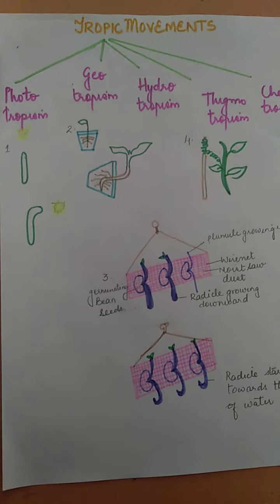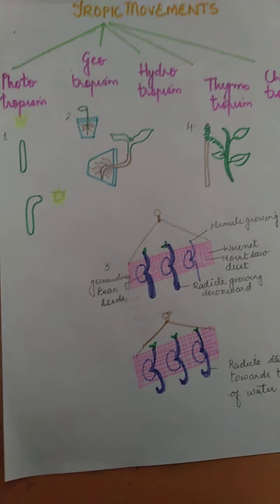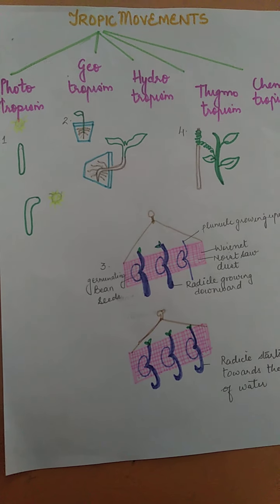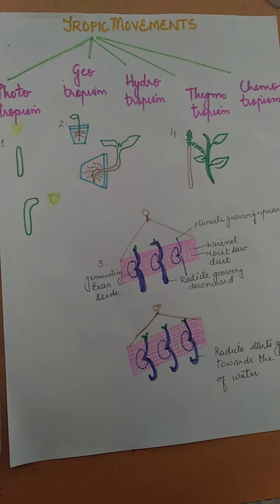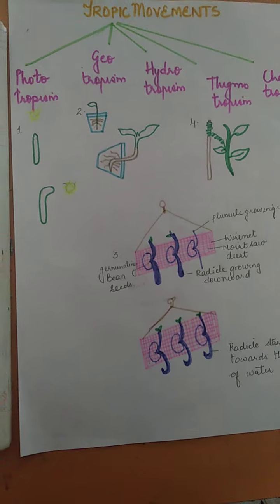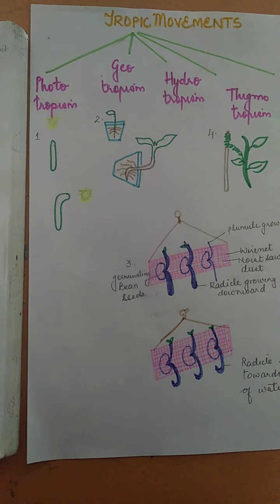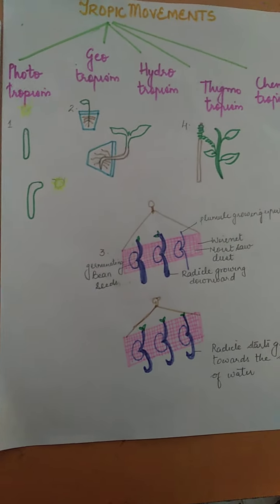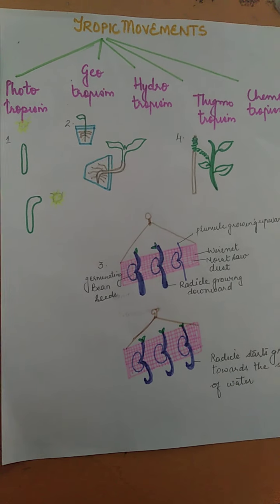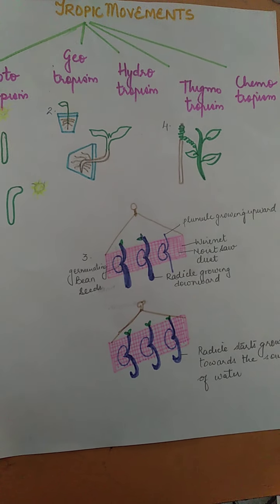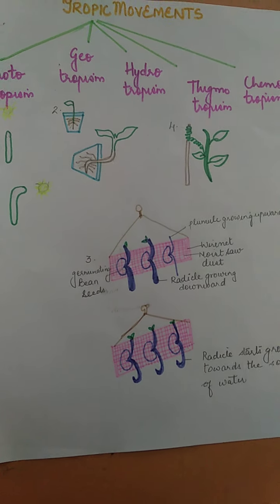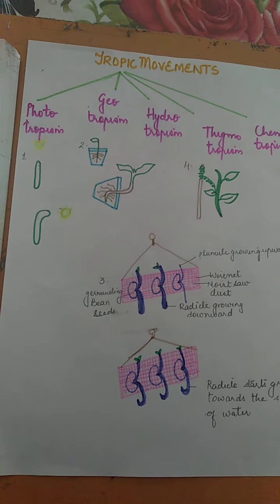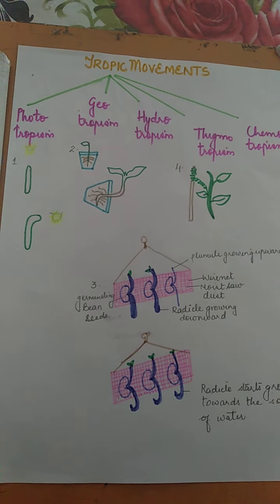Hello students, now we come to the tropic movements. There are different types of tropic movements that plants show. We generally read about five tropic movements included in your ICSE 10th biology book: phototropism, geotropism, hydrotropism, thigmotropism, and chemotropism. We will learn about them one by one. I've made some diagrams to help you understand what is happening in all of these.